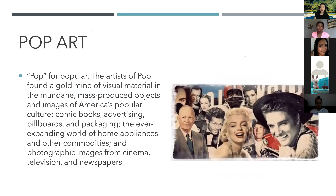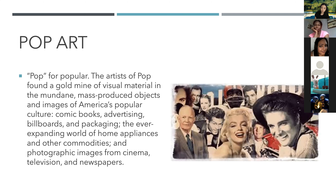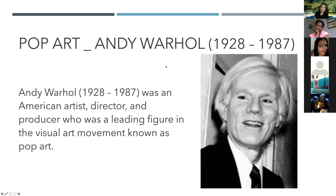The first art movement in the 60s and 70s we will see is pop art. Pop, short for popular — the artists of pop found a goldmine of visual material in the mundane, mass-produced objects and images of America's popular culture: comic books, advertising, billboards, packaging, home appliances and other commodities, and photographic images from cinema, television, and newspapers. Like neo-Dada, pop drew art closer to life — but life as it had already been transformed into images by advertising and the media. We are going to see three of the most popular pop artists.